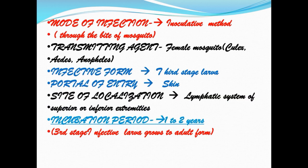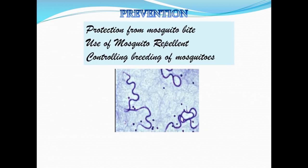Prevention: protection from mosquito bite, use of mosquito repellent, and controlling the breeding of mosquitoes. We can prevent ourselves from infection by this parasite by controlling mosquito breeding.